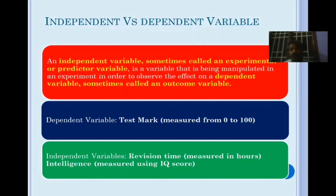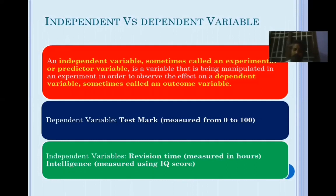Then comes the dependent variable — also called the outcome variable. For example, the mark scored by a student is a dependent variable. Independent variables could be gender, whether he attends tuition, online classes, communication skills, or number of study hours per week. The dependent variable is the outcome variable; the independent variable is the predictor variable.